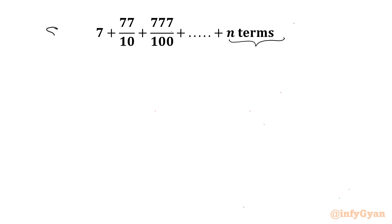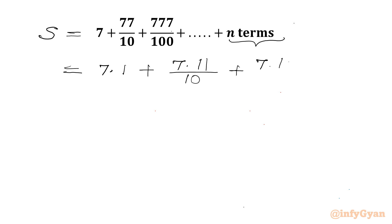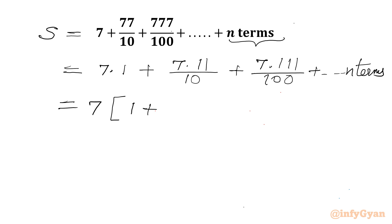So let's consider this sum equal to S first. Now let's factorize 7, 77, 777. So I will be writing 7 times 1, 7 times 11 over 10, 7 times 111 over 100 and so on up to n terms. Now 7 is common, so in bracket: 1 plus 11 over 10 plus 111 over 100 plus up to n terms.